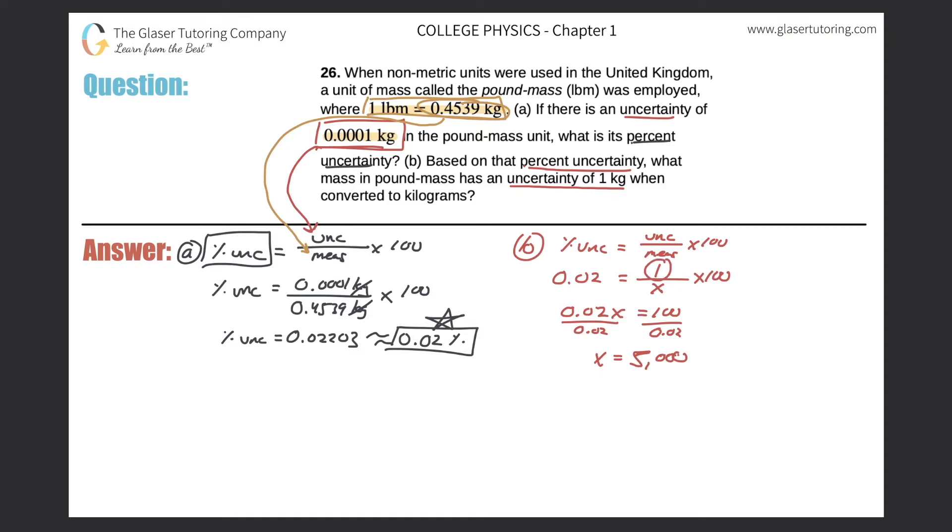Now consider what the units are. Remember, the value of one in the equation represented one kilogram. And I just mentioned before that these units have to be consistent between the numerator and the denominator. So what that means is that the value of 5,000 is the value in kilograms. Now this is the value that is associated with a one kilogram uncertainty. 5,000 kilograms. But is that what we wanted? Well, it said what mass in pound mass? Well, this isn't in pound mass. It's in kilograms. But we can easily convert that to pound mass because they gave us the conversion.